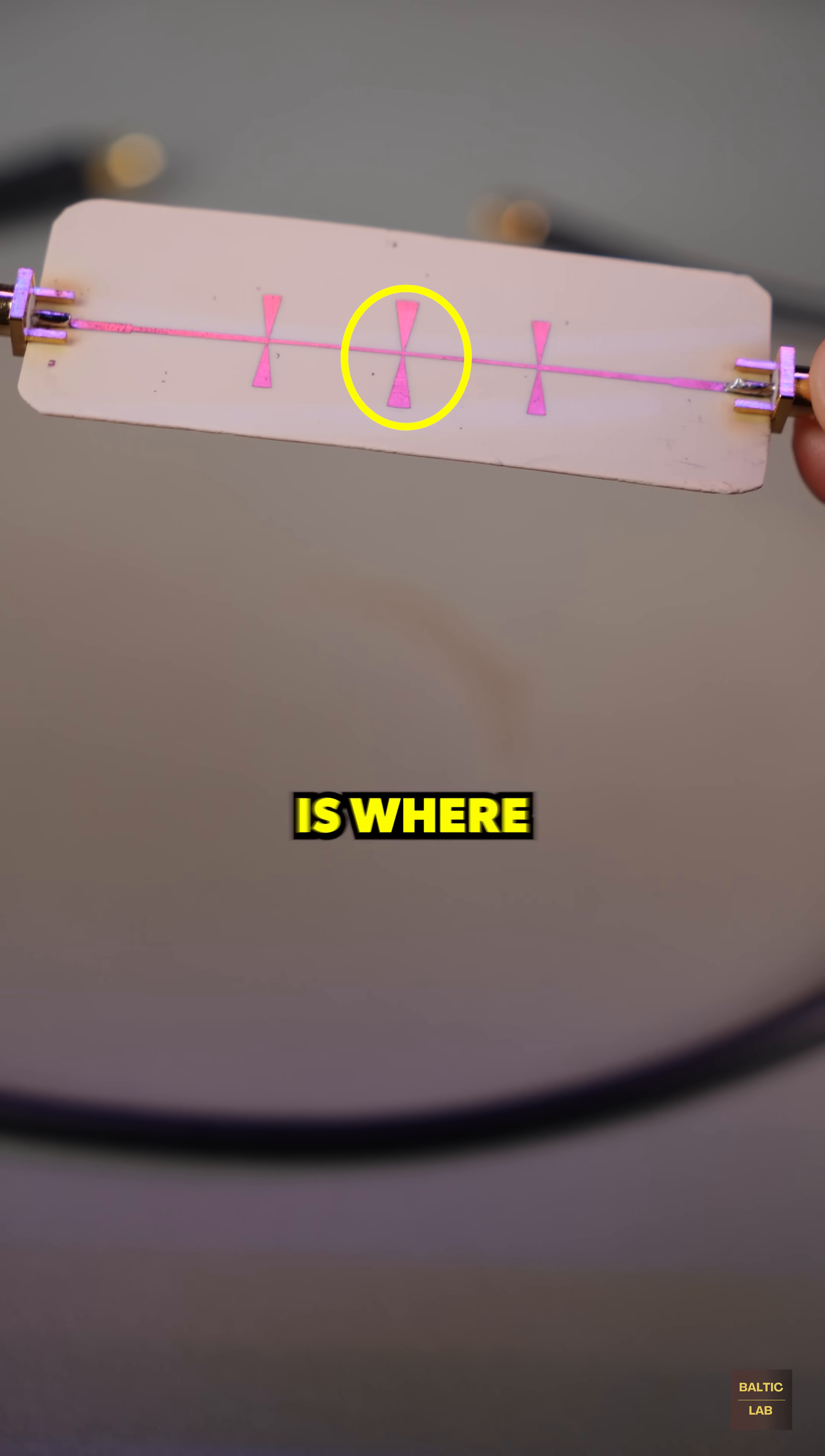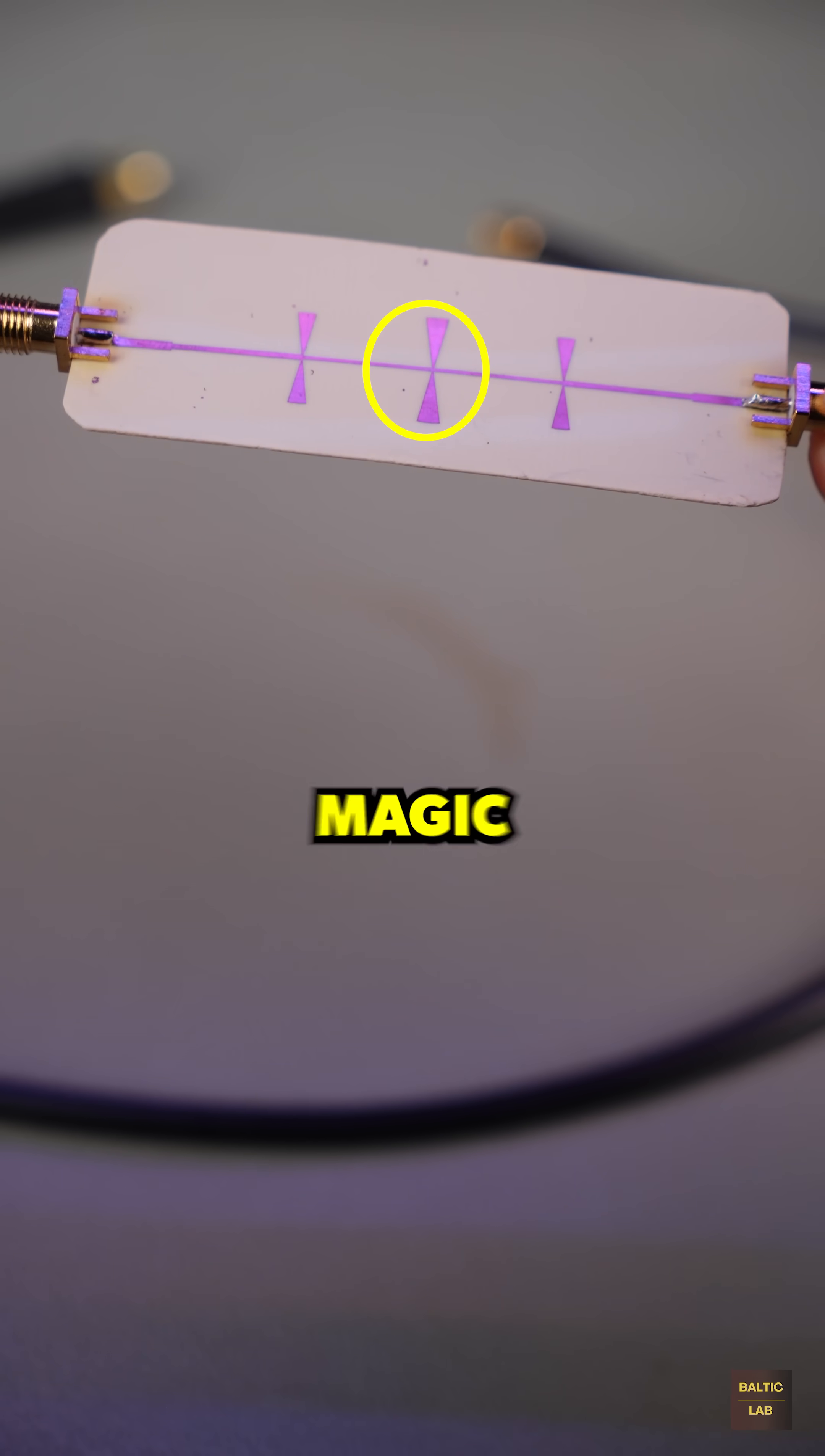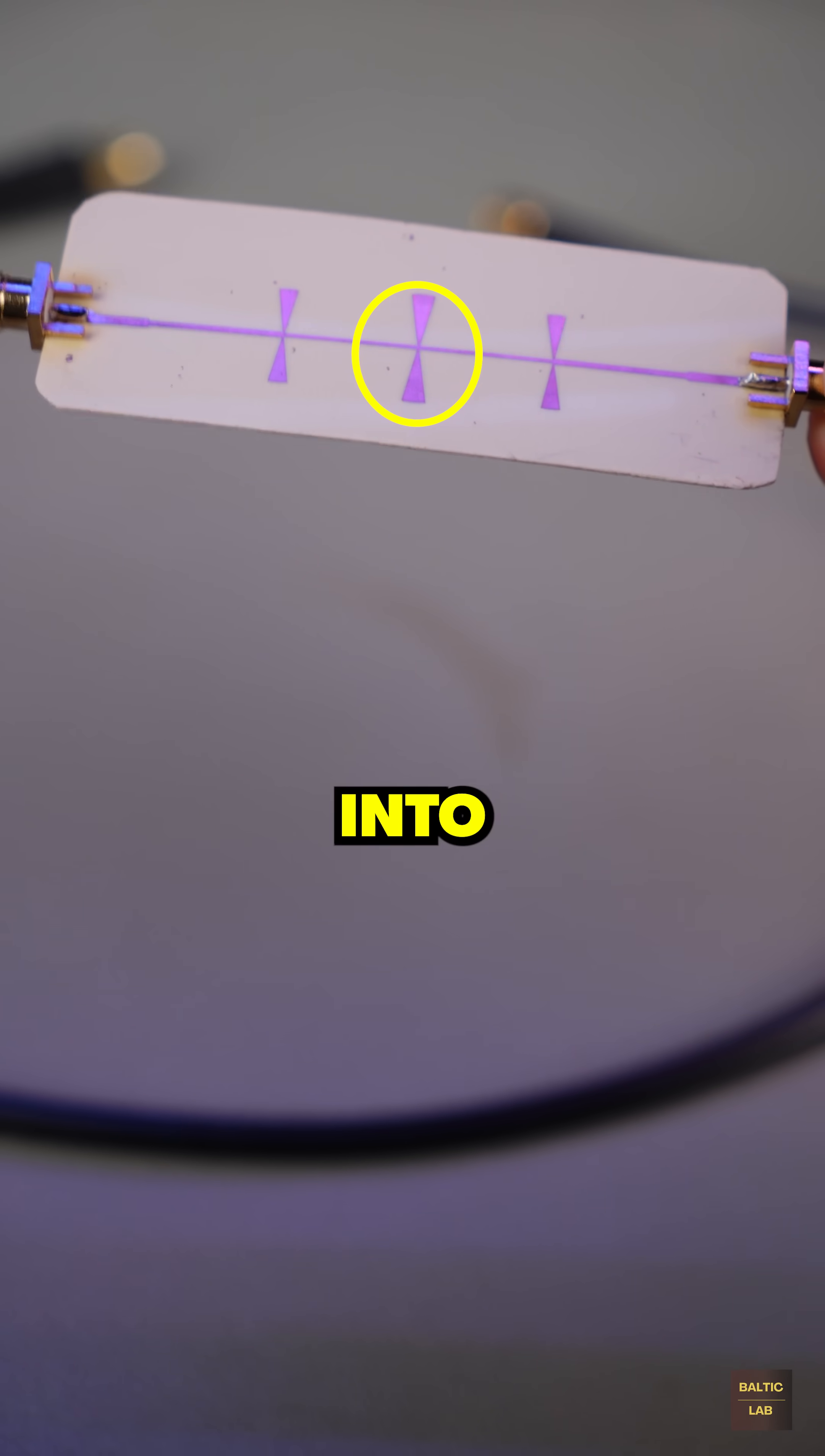The center element, however, is where it gets interesting. Here, using a bit of high frequency magic, specifically the Richards transformation and Kuroda identities, a capacitor is cleverly turned into an inductor.